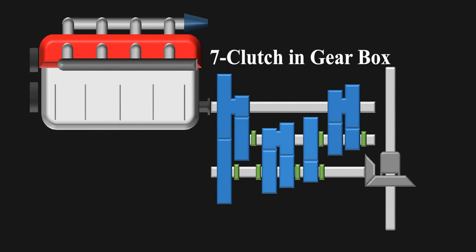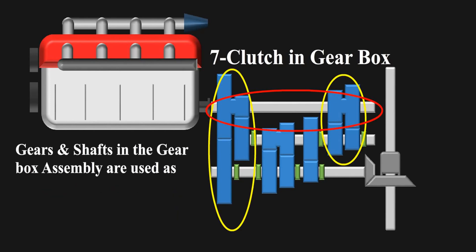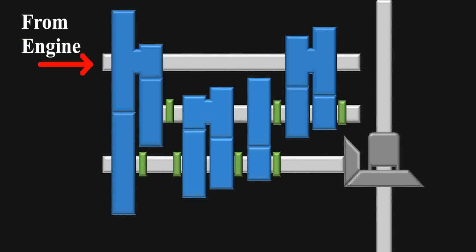The engine on this car doesn't have any flywheel either as it would increase the weight. So, the gears and shafts in the gearbox assembly are used as mini flywheels to store the inertia and give it back. The gearbox looks like this. The engine gives power to this shaft and finally driven shaft is this which connects to the differential to drive the car.